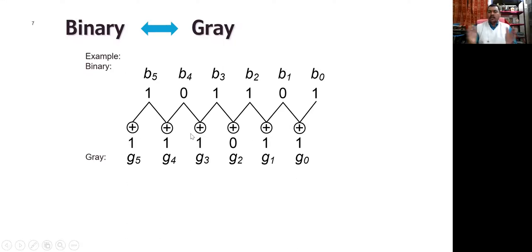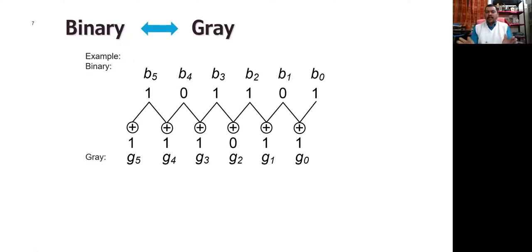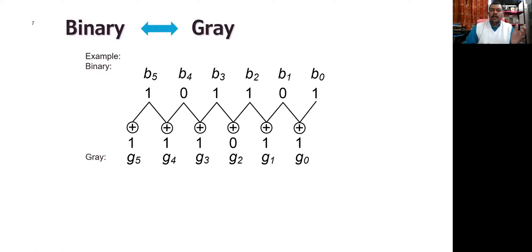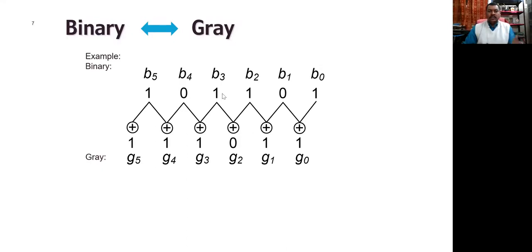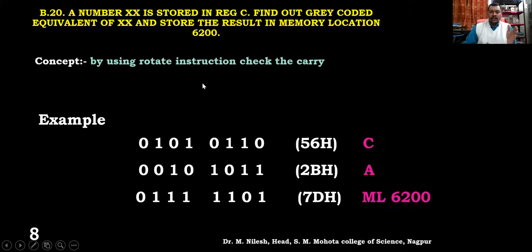So this is the Gray equivalent. What we have done is simply shifted the number to the right and then added — but adding means we neglect the carry. Such adding can be done using the XOR instruction. XOR adds but neglects the carry. So that is the instruction we need to use. This is the simplest program that you can do at home. We are going to use RAR to rotate it and then XOR it.